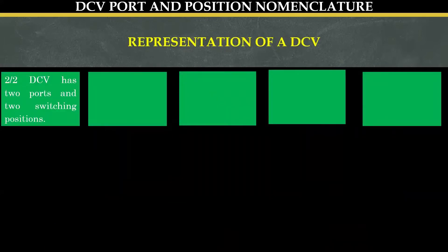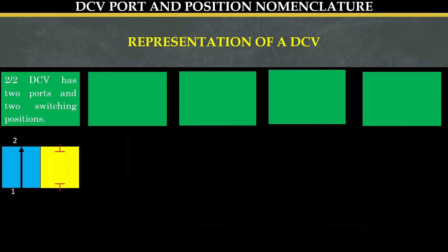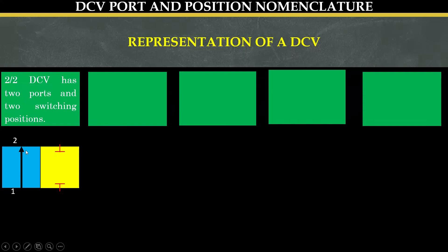Now let us see how a valve is represented. A two by two direction control valve, as the name suggests, has two ports and two switching positions. Blue color and yellow color are the two different positions, and one and two are the two ports. Port one is connected to port two in the left hand side, meaning the valve is in actuated position, whereas in the normal position the valve is not allowing the fluid to flow — so it is blocked.